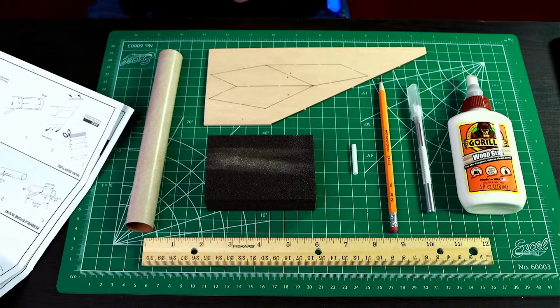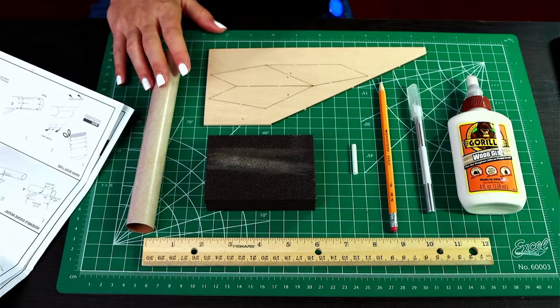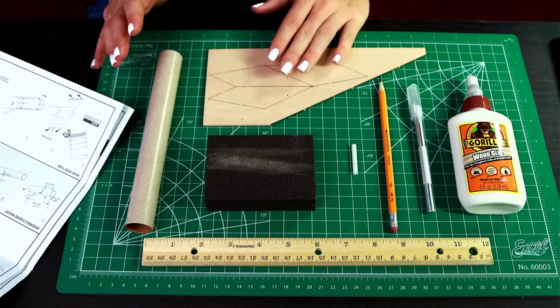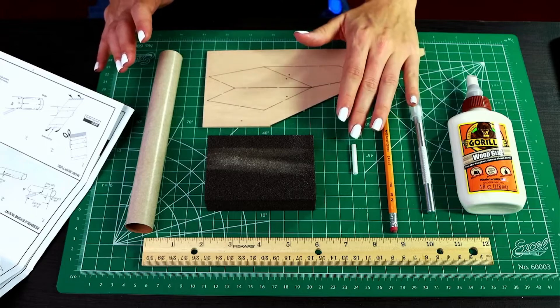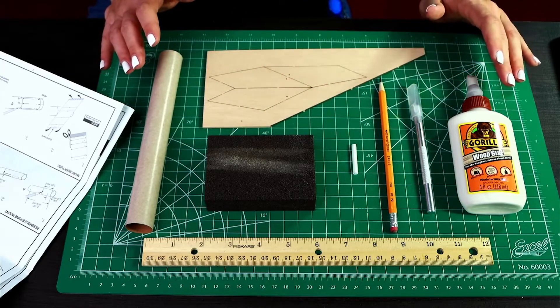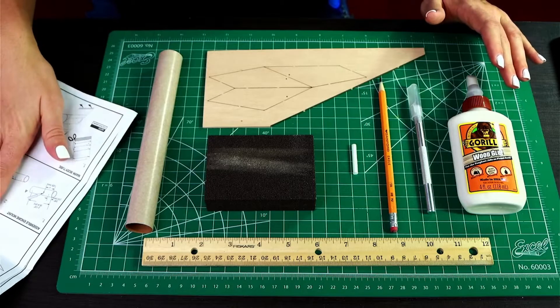Next up, we are going to mark the body tube and then attach the fins and launch lug. You'll need the body tube, your balsa wood fins, launch lug, as well as sandpaper, ruler, pencil, hobby knife, glue, and your instructions.